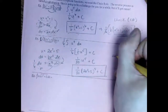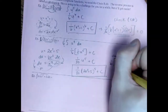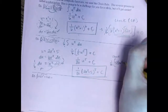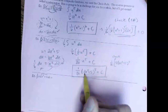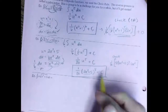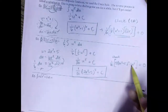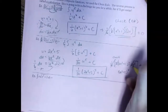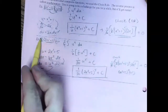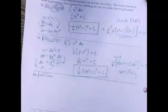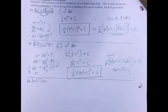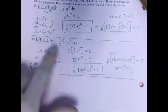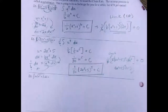Let's check it by taking the derivative. I have 1/30, something to the fifth power gives 5 times something to the fourth — whatever's inside stays inside — then I account for the inside piece: the derivative of 2X cubed plus 5 is 6X squared, and the derivative of the constant is 0. So 6 times 5 is 30, and 1/30 cancels with the 5 and the 6, leaving me 2X cubed plus 5 to the fourth times X squared — which is exactly what the original integration began as. Always a good idea to check.